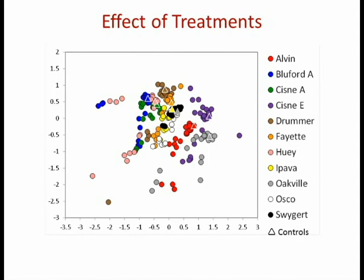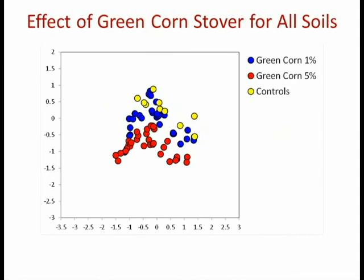These are the results for the green corn stover — not biochar, just the raw green corn stover material applied to the soil. The yellows are the controls, the blue is the 1% addition, and the red is the higher 5% addition. With the green corn stover, the 1% is beginning to shift the community, and the 5% has really shifted the community away from the controls — a significant influence on composition from 5% addition of green corn stover.